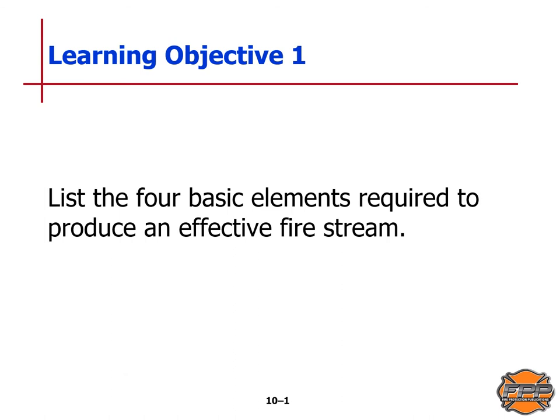I'm going to list all of our learning objectives here, and then we'll start with learning objective one. In this chapter, we will list the four basic elements required to produce an effective fire stream, describe the characteristics of fire streams, describe the characteristics of fog streams, and in objective four, describe the characteristics of broken streams.